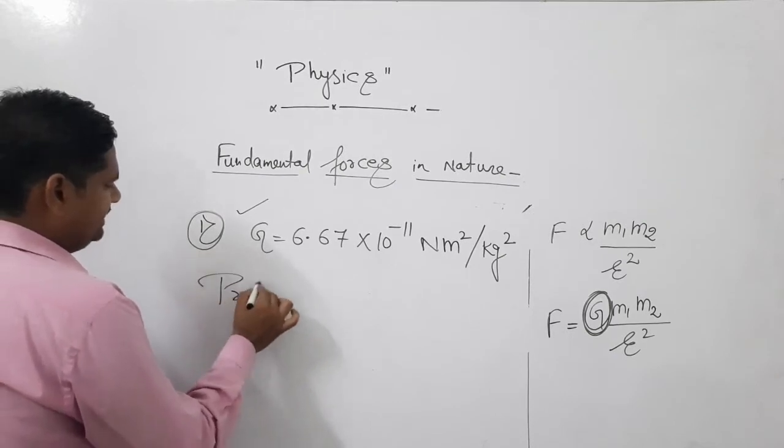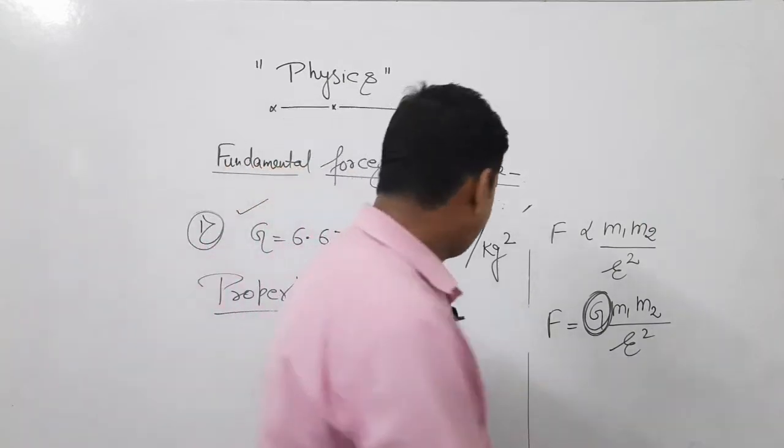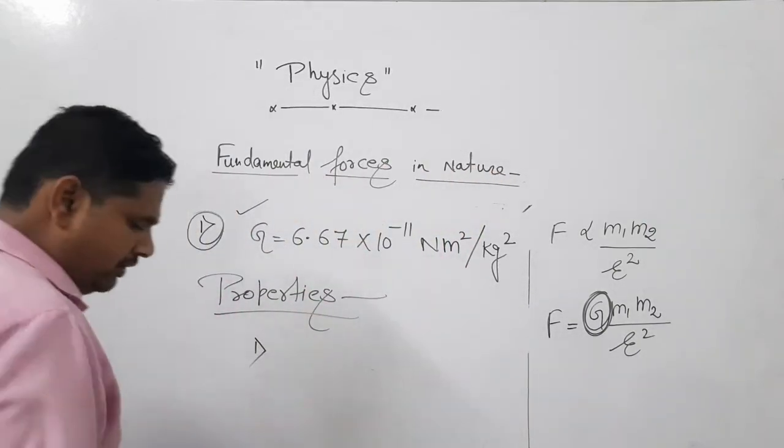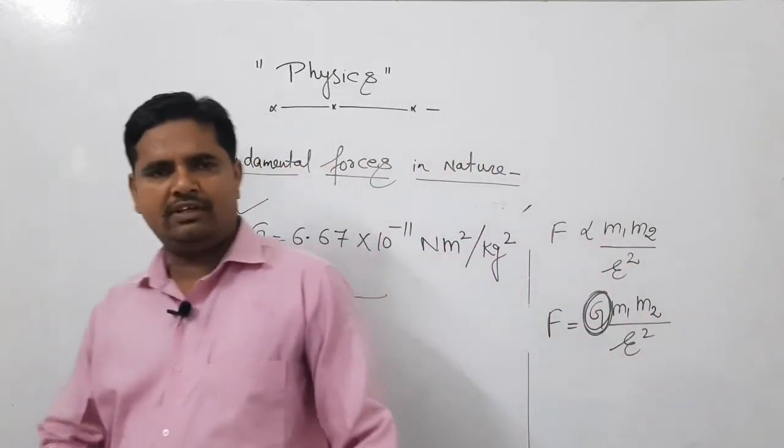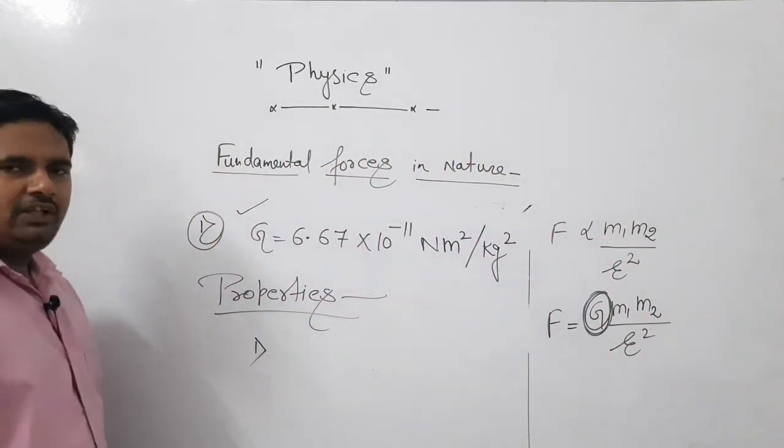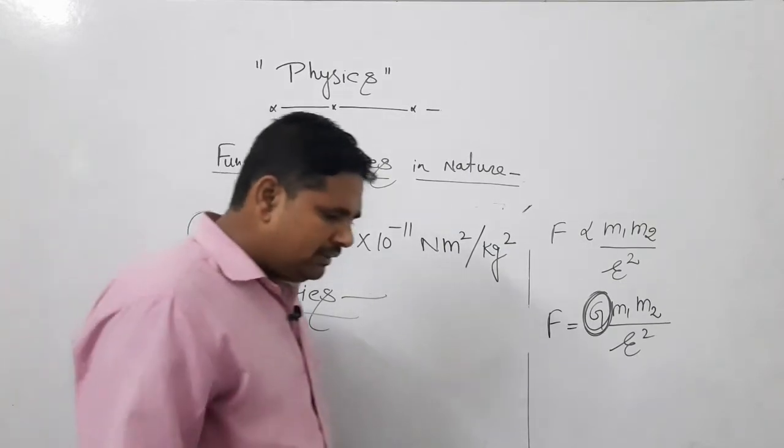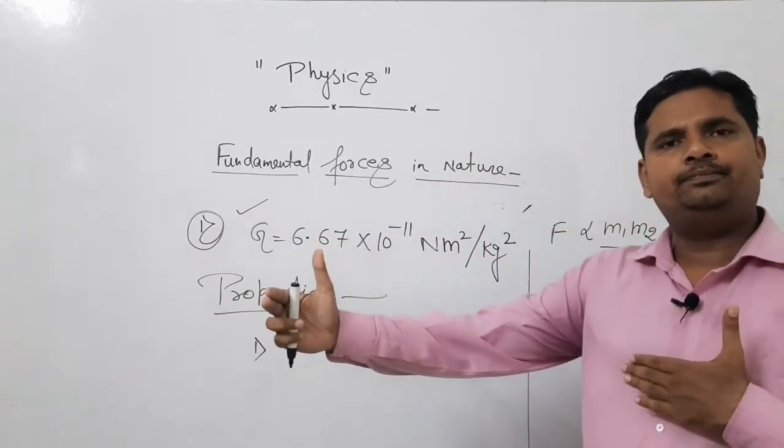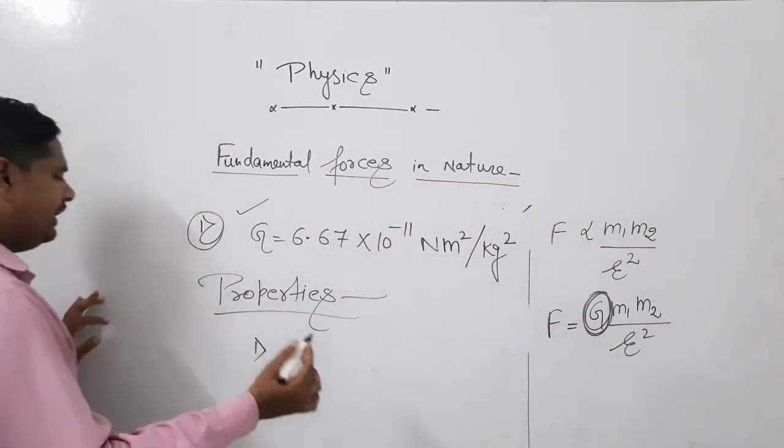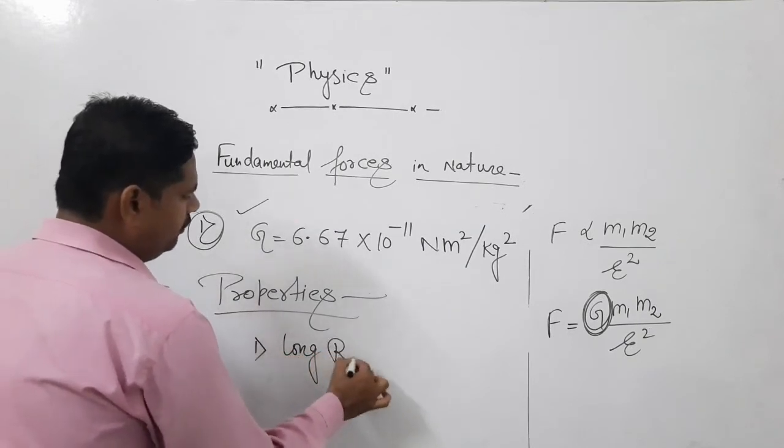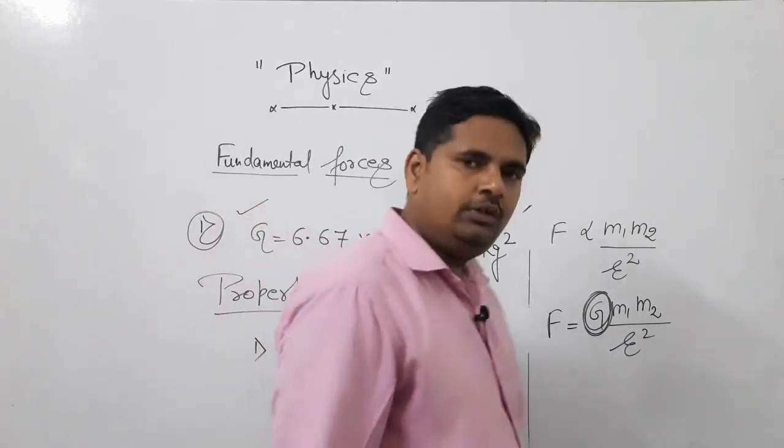Now this was gravitational force, first force. Now we come to its properties. What are its properties? On what things does it depend? First one: you must have seen there is a gravitational force between sun and earth - between them also there is due to rotation. You have also heard between moon and earth there is this force. Their distance is very large, still this force is working. So from here I can say that it is a force of long range. So its range is long range force.